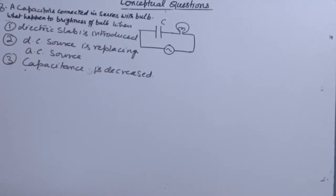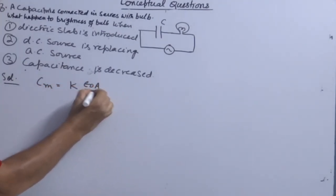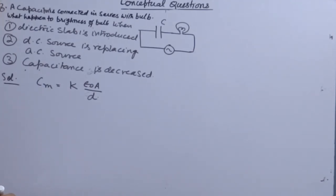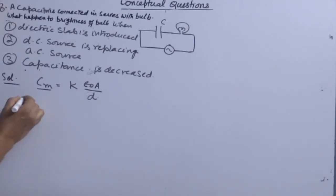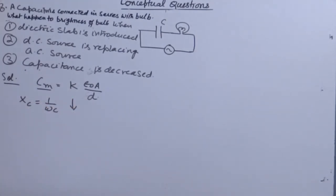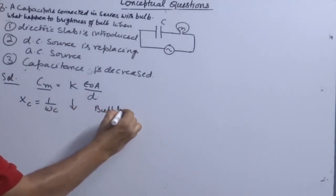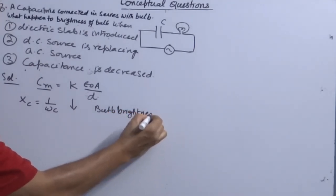When you introduce a dielectric slab, capacitance increases — C = kε₀A/d where k is the dielectric constant. When capacitance increases, XC = 1/ωC decreases. XC measures resistance, therefore bulb brightness increases.